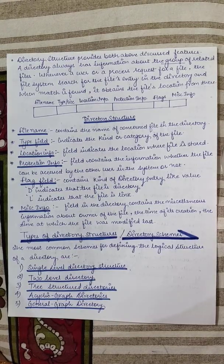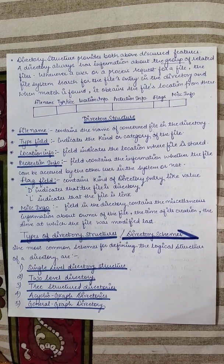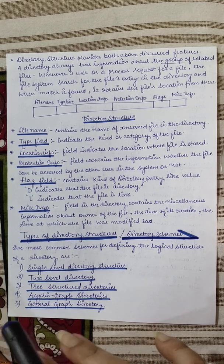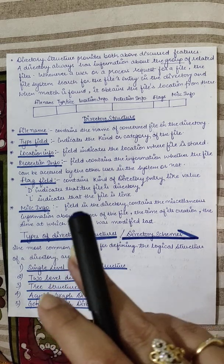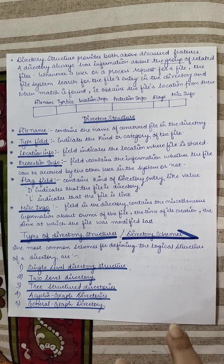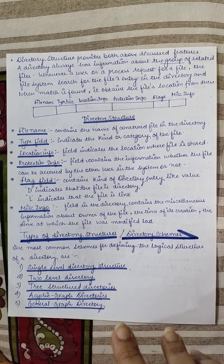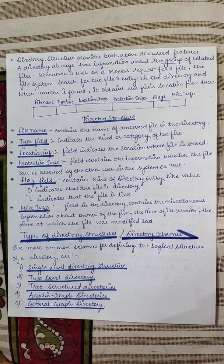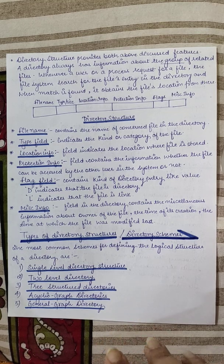A proper directory structure will have both features: freedom of naming and sharing of files. The directory always contains information about a group of related files. Whenever a user or process requests a file, the file system searches for the file entry in the directory, since all files are stored there. The directory is a special file which contains entries of other files.